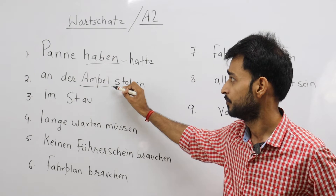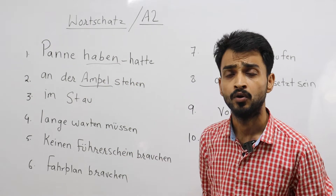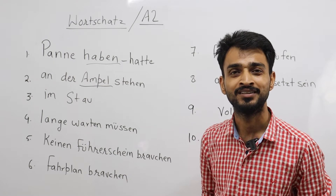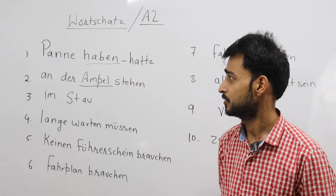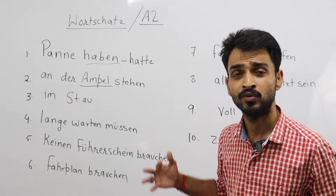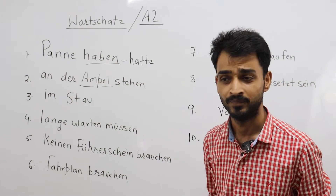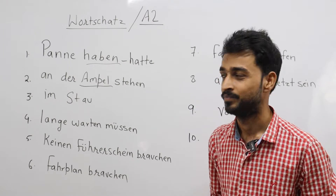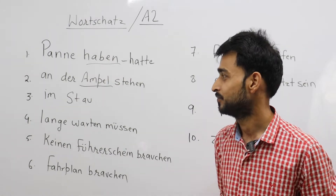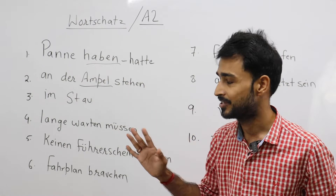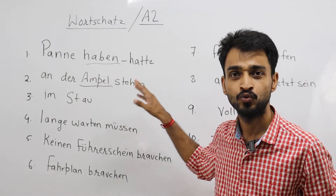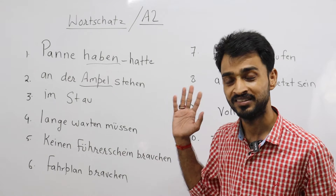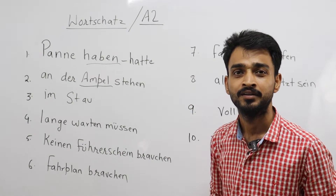Next: Ampel, Stehen - traffic signal. 'Ich stehe an der Ampel' or 'Ich möchte nicht an der Ampel stehen.' I do not want to stand at the traffic signal. That's why I travel by train, by U-Bahn, or by Metro. 'Ich möchte nicht an der Ampel stehen' - I do not want to wait at the traffic signal, so this is the reason I want to travel by train.